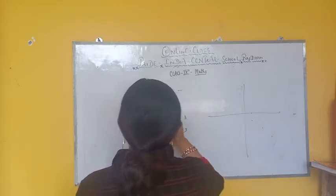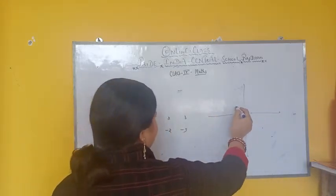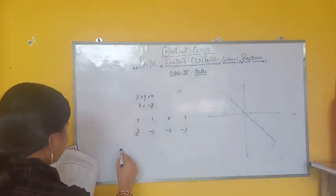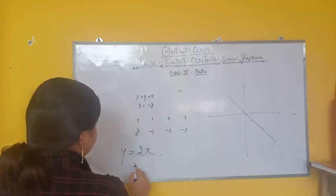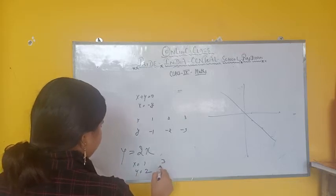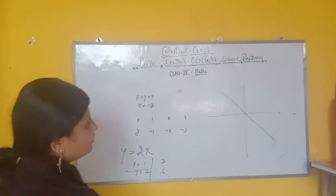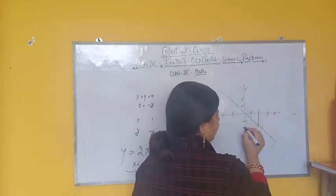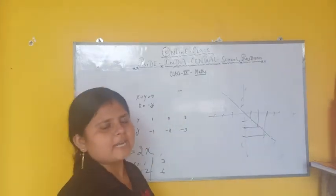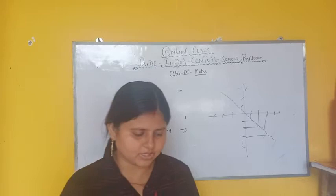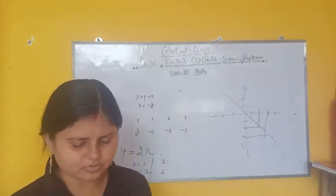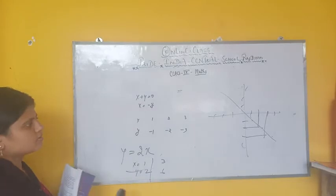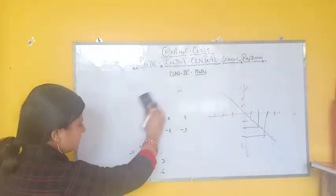अगर x 0 है तो y 0, अगर x minus 1 है तो y 1 — इस तरह से हमारा graph बन जाएगा। Similarly अगर हमको next equation दी है y is equal to 2x, तो अगर x 1 है तो y 2 है, x 3 है तो y 6 है। इस तरह से values लेकर graph पर mark कीजिए — 1,2,3,4 और minus 1,2,3,4 — सारे points को join करके जो line बनेगी वो उस equation का graph है। इसी तरह से आपको exercise में करना है।